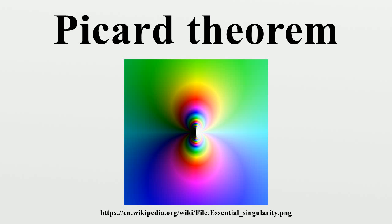Sketch of proof: Picard's original proof was based on properties of the modular lambda function, usually denoted by lambda, which performs, using modern terminology, the holomorphic universal covering of the twice-punctured plane by the unit disk. This function is explicitly constructed in the theory of elliptic functions. If f omits two values, then the composition of f with the inverse of the modular function maps the plane into the unit disk, which implies that f is constant by Liouville's theorem.